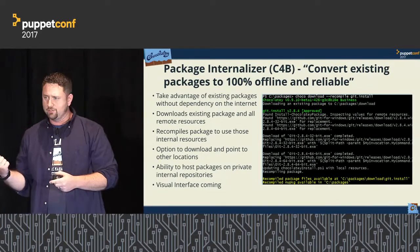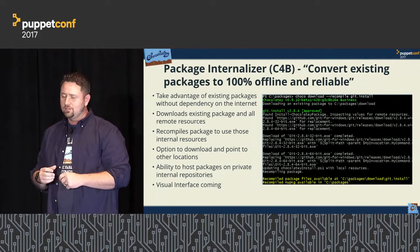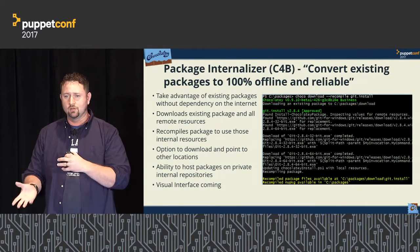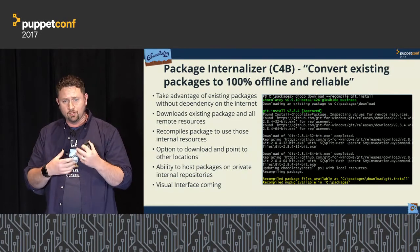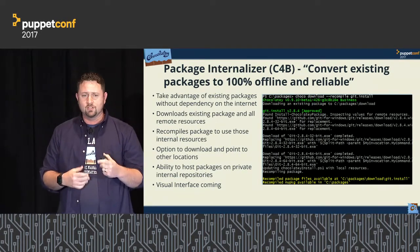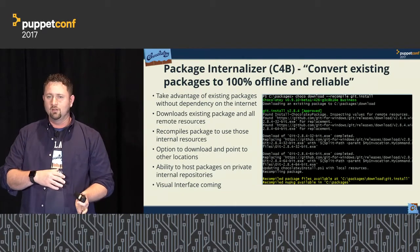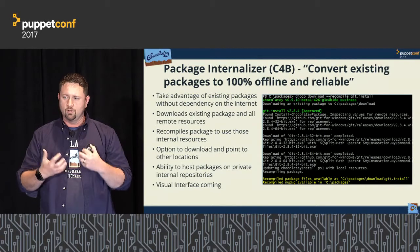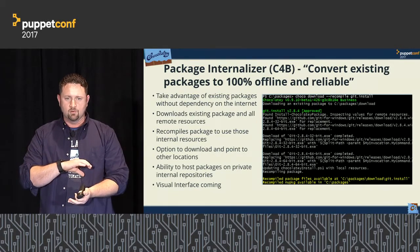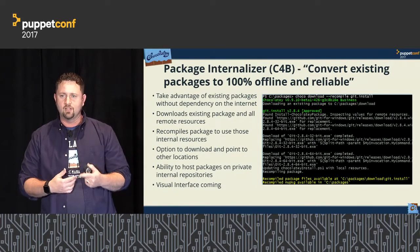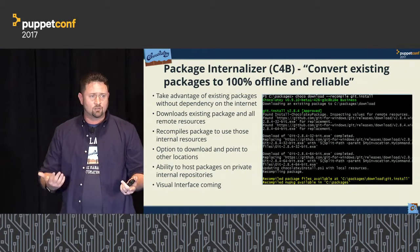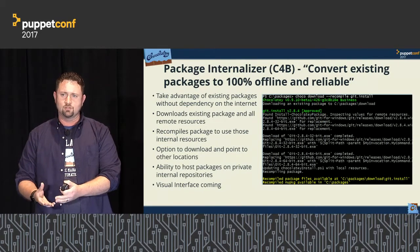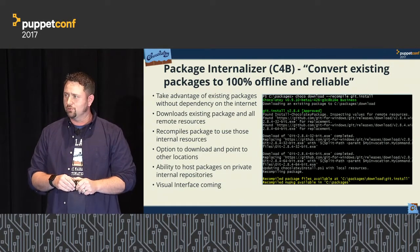Package Internalizer is another tool. In Chocolatey for Business, this lets you take advantage of all the existing community logic while making packages 100% offline and reliable — it pulls packages in and removes all internet access by pre-downloading everything. Organizations use it to automate the process so they don't have to think about new software versions. They set up Team City, Jenkins, or a scheduled job: when software becomes available as a package, they have it internalized, push it to a test repository, validate it, then push to production.